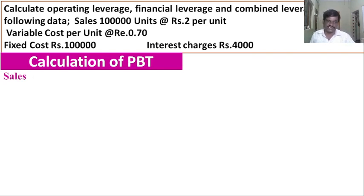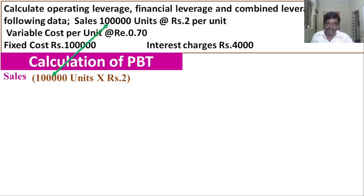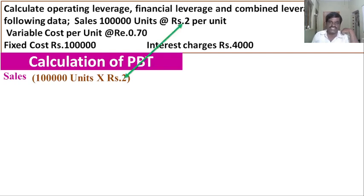First, we take sales. The number of units sold in this problem is one lakh units. The selling price per unit is rupees two. So one lakh units multiplied by rupees two gives us total sales of rupees two lakh.